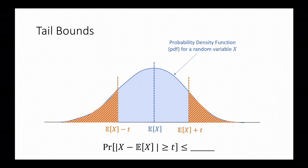Tail bounds are an extremely useful tool in the analysis of randomized algorithms. Markov's inequality and Chebyshev's inequality are two of the simplest such bounds, but they're really general and in some cases they can be tight.